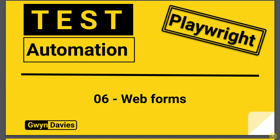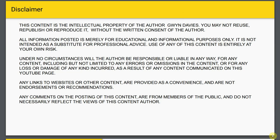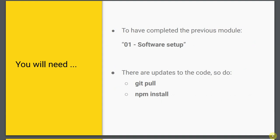This is the sixth module in the series on test automation with Playwright. In this module we're going to be looking at web forms. You will need to have completed the first module, which was zero-one software setup, if you want to follow along with the code. The code is available from GitHub - there'll be a link in the video description. If you previously got the code from GitHub, some updates have been made for this module so you'll need to do a git pull and an npm install.